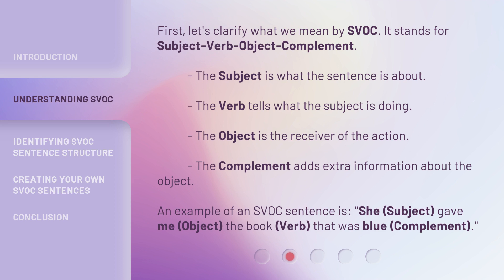An example of an SVOC sentence is: 'She' (subject) 'gave me' (object) 'the book' (verb) 'that was blue' (complement).